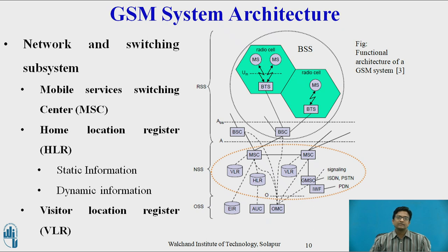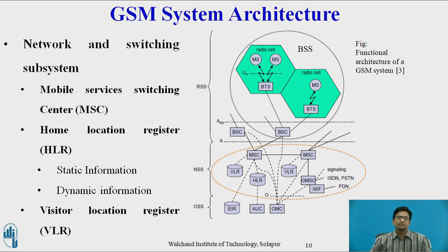Next is the Network and Switching Subsystem. It is the heart of the GSM System Architecture — it connects the wireless network with the standard public network. NSS also performs handover between different BSSs. NSS consists of MSC (Mobile Service Switching Center), HLR (Home Location Register), and VLR (Visitor Location Register).